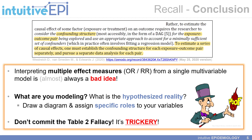In terms of the conclusion in the May 25th version of the Westerreich, Van Smeden, and Edwards comment on the OpenSAFELY paper, it's important to look at each exposure on its own and potentially fit a series of multivariable models — or a series of Table 2s — in order to more meaningfully examine the relationship between a given exposure and an outcome. Interpreting multiple measures of effect from a single multivariable model is almost always a bad idea; you should be thinking about the hypothesized reality you are examining, drawing diagrams, and assigning specific roles — such as exposure, confounder, or effect modifier — to the variables in your model.